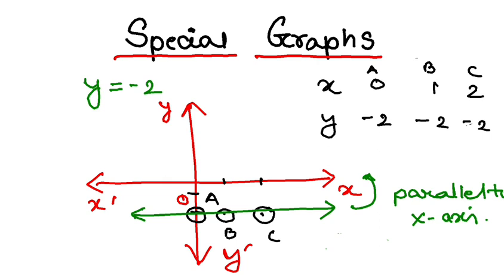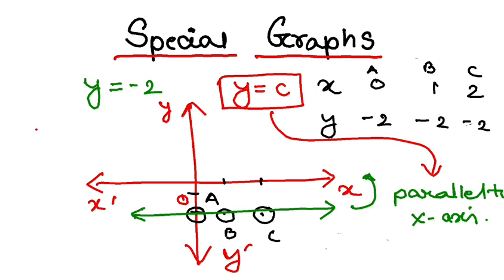The summary is, if I have an equation like y equal to constant, something like this, this graph is always going to be parallel to y-axis. So x equal to c, parallel to y-axis, y equal to c, parallel to x-axis. That's all you need to learn from this. Special graphs, part 1.